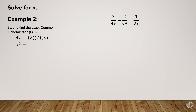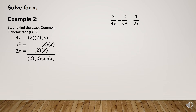The prime factors of x² are x and x. Since there are common factors, we write them vertically so each is only listed once. The prime factors of 2x are 2 and x. To find the LCD, we write all factors, listing common factors only once: 2 × 2 × x × x = 4x². So the LCD is 4x².